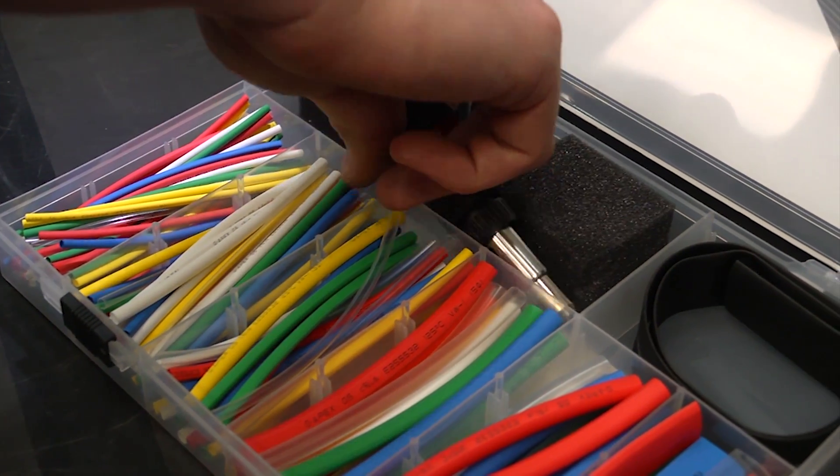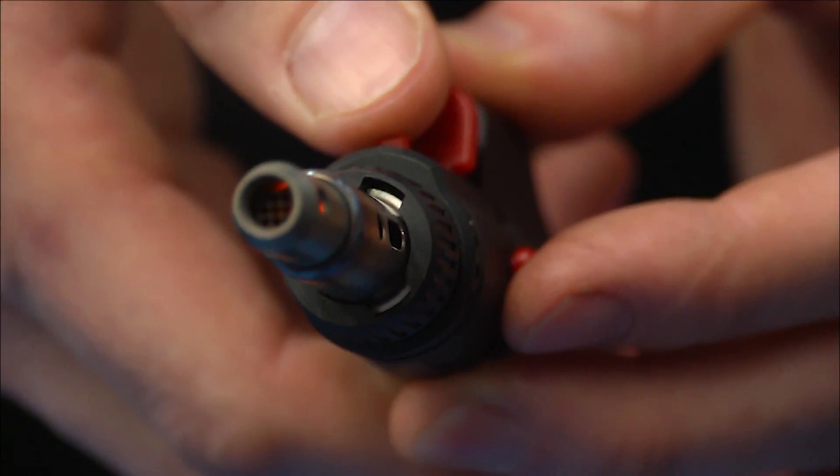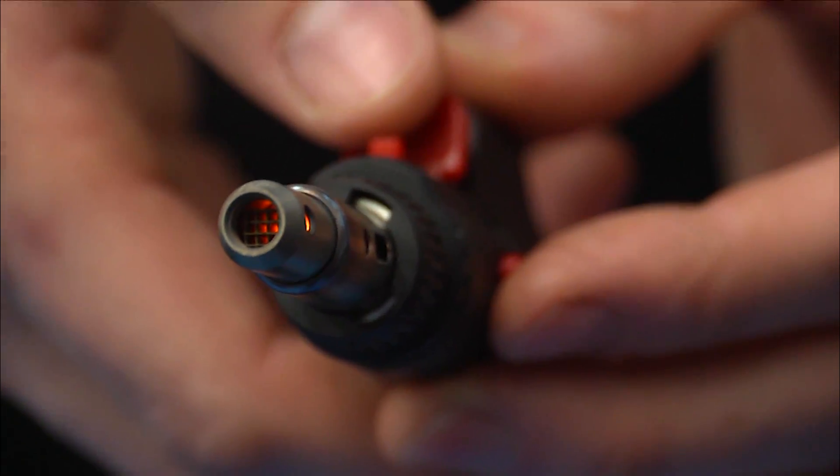The butane-powered gas torch in the kit provides a very soft, even heat that is ideal for heat shrink work.